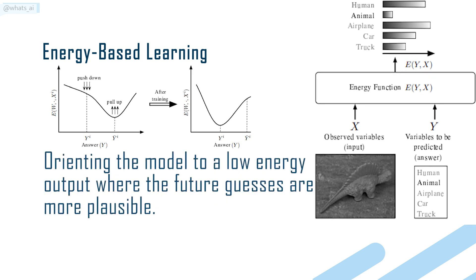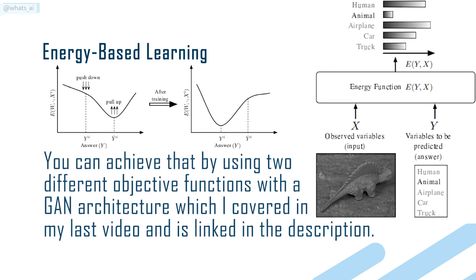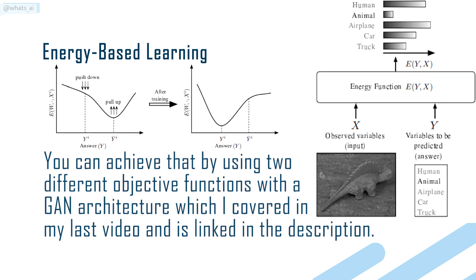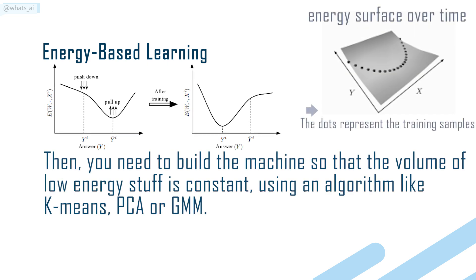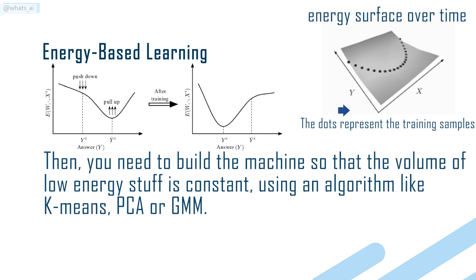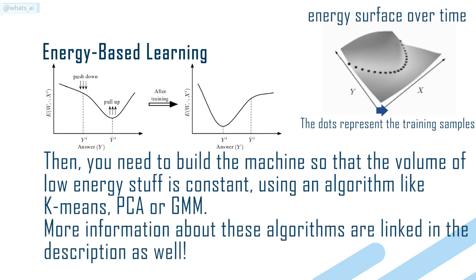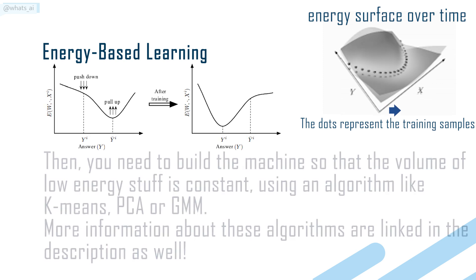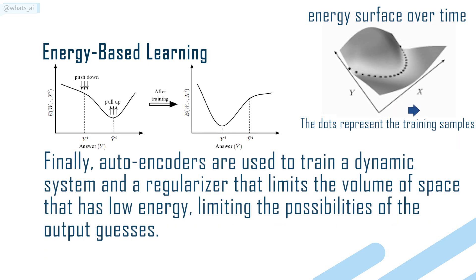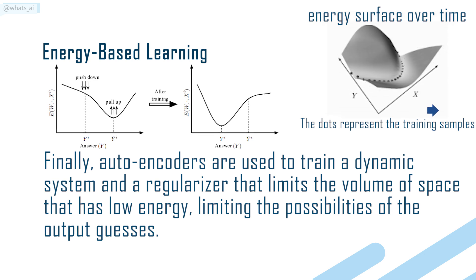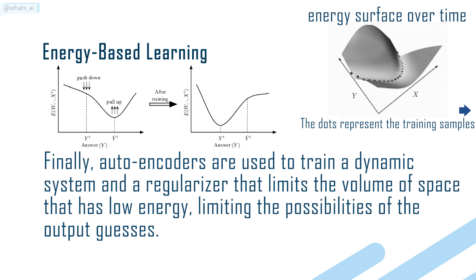You can achieve that by using two different objective functions with a GAN architecture, which I covered in my last video linked in the description. Then you need to build a machine so that the volume of the low energy region is constant, using an algorithm like K-Means, PCA, or GMM. More information about these algorithms is linked in the description. Finally, autoencoders are used to train a dynamic system and a regularizer that limits the volume of space that has low energy, limiting the possibilities of the output guesses.